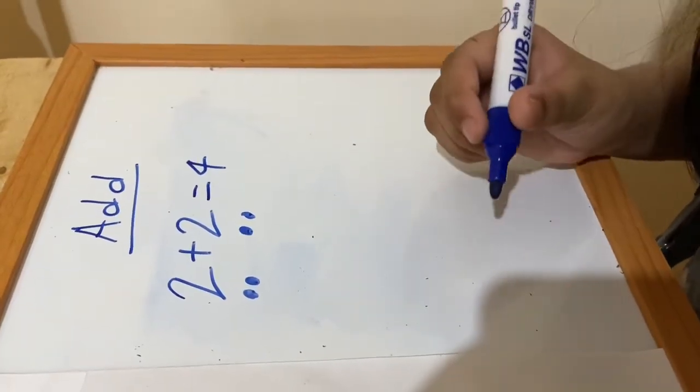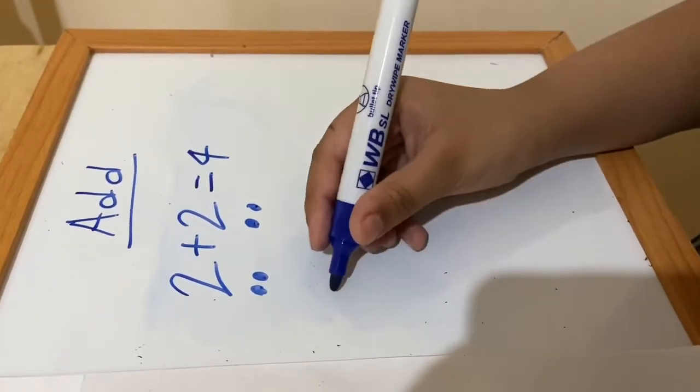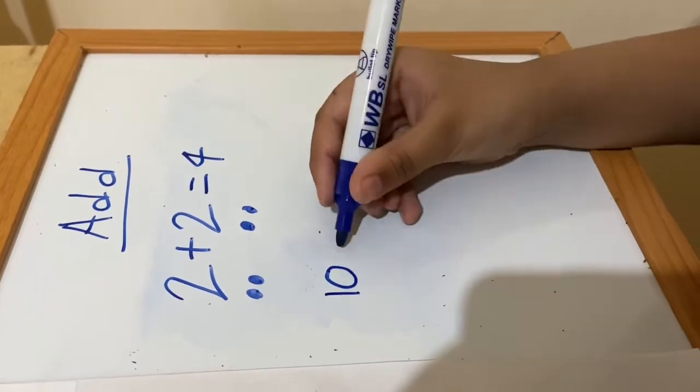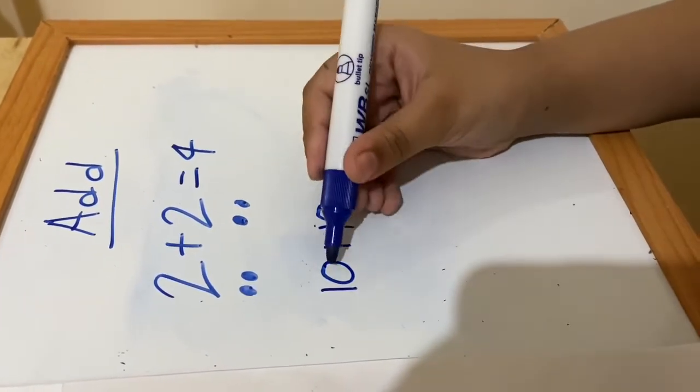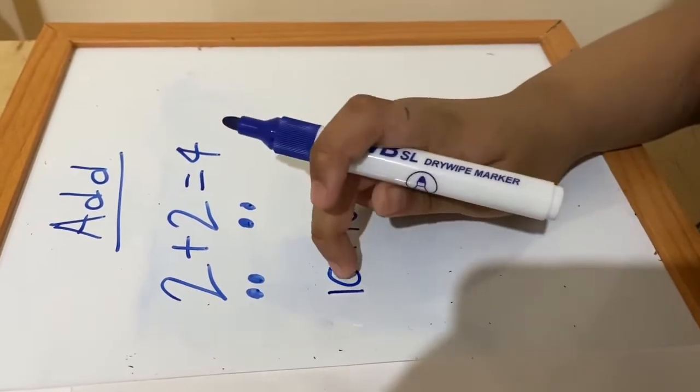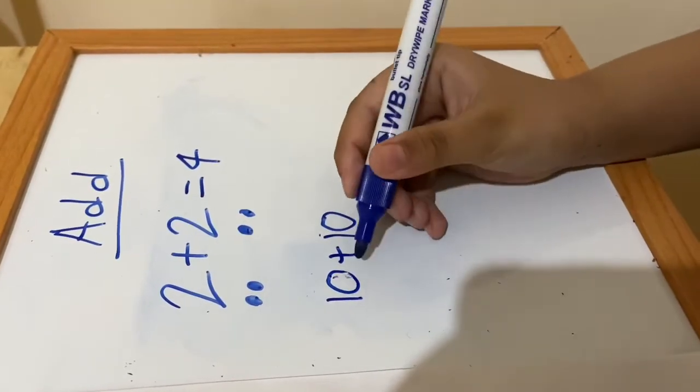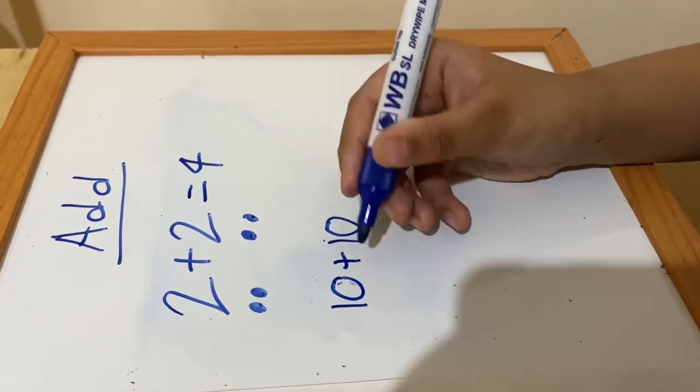Okay, this time we're going to do two-digit numbers, for example 10 plus 10. Now you can see there's no units, right? So the easiest way is just do one line for each one of them.